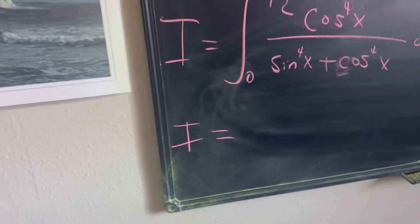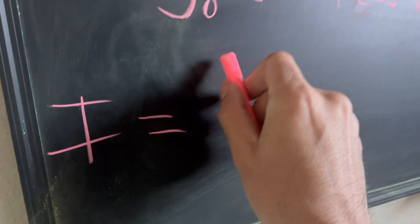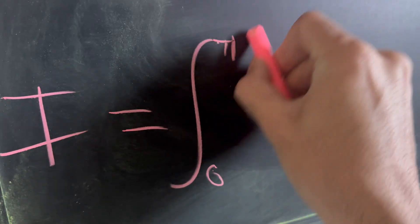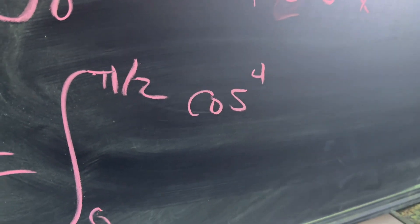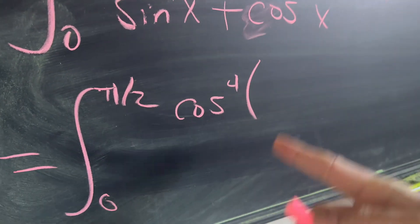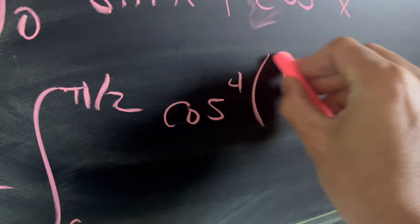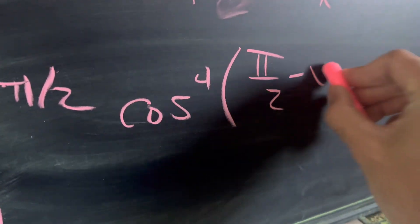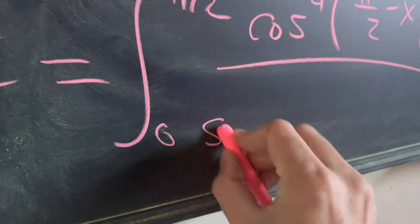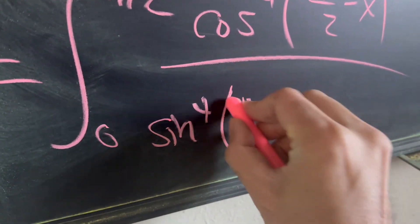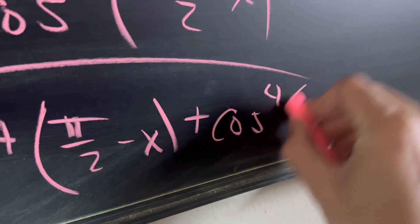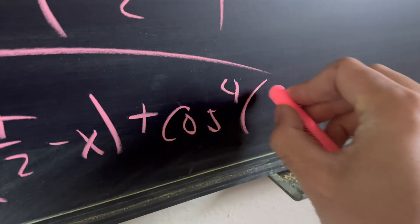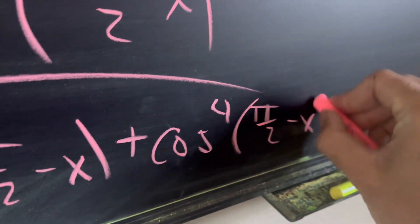We're going to say that this integral i is still equivalent to the integral from 0 to pi over 2, but now we're going to have cosine to the power of 4 of pi over 2 minus x over sine to the power of 4 of pi over 2 minus x, and then we'll continue, plus cosine to the power of 4 of pi over 2 minus x.